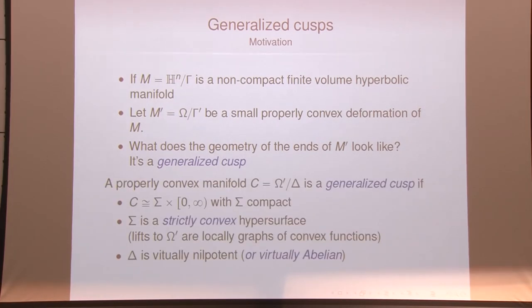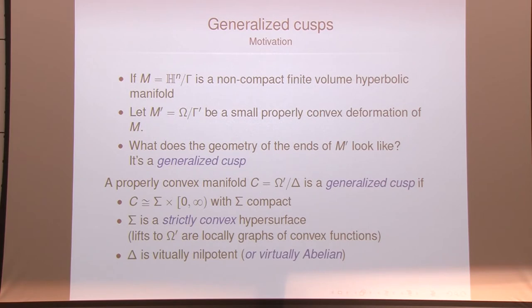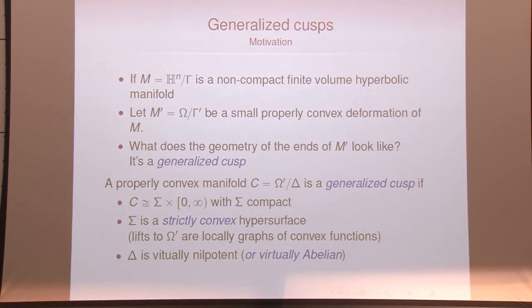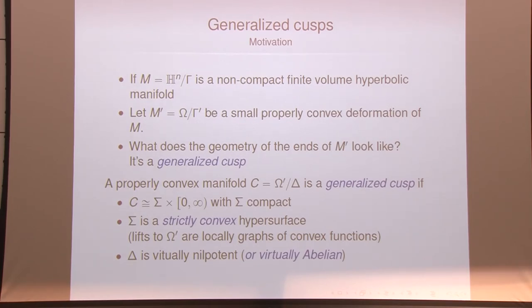So what is a generalized cusp? It's a certain type of properly convex manifold. Topologically, it looks like a compact hypersurface cross interval. More geometrically, the hypersurfaces can be realized as strictly convex subsets of the domain omega. Lifting the foliation to omega, you see things that locally look like graphs of convex functions. There's also an algebraic condition on the fundamental group: you insist it be virtually nilpotent. With a bit of work, this implies that the groups in question are virtually abelian — so if it's more comfortable, you can just assume throughout that the groups were virtually abelian.